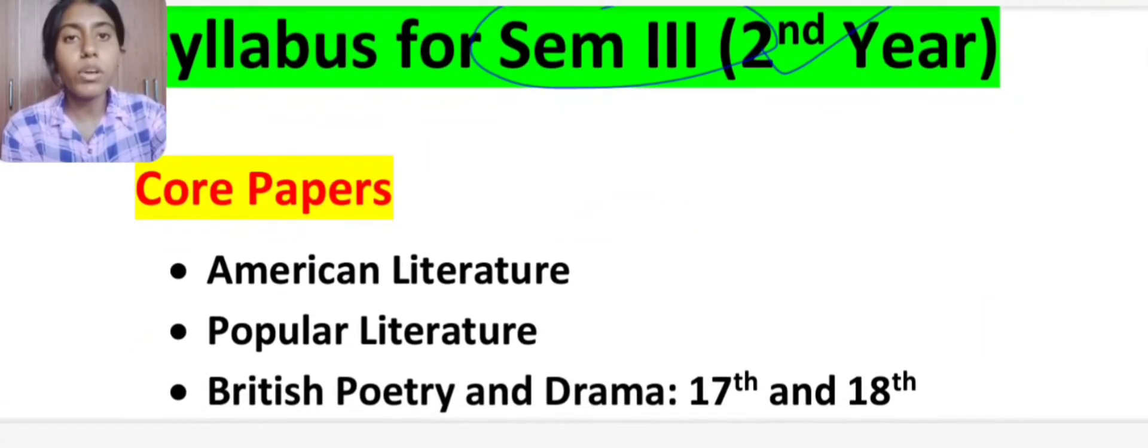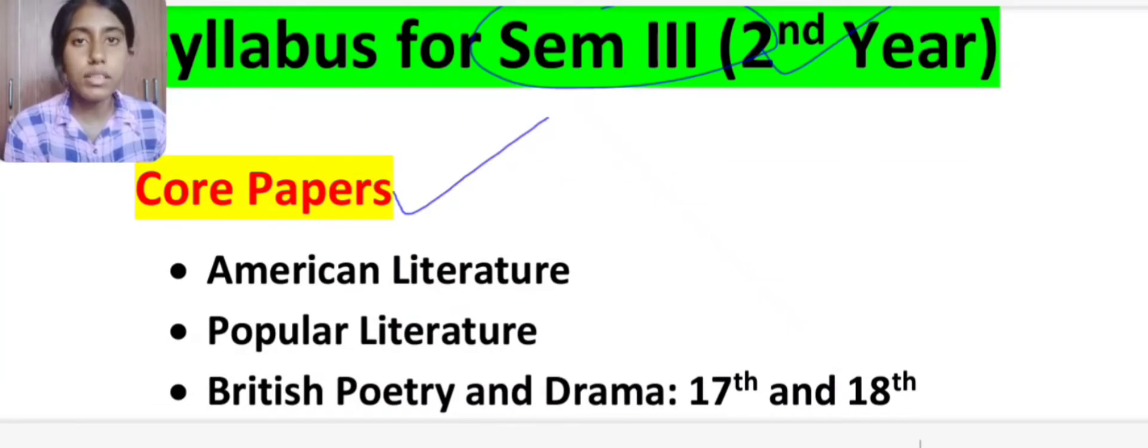So guys see that you have in semester 3 core papers. Core papers means English honours main papers. Besides that you have SEC, GE, Generic Electives, DSE papers. You have 3 main exams in English honours. American Literature, Popular Literature and British Poetry and Drama, 17th and 18th century. These 3 are the core papers of this semester.